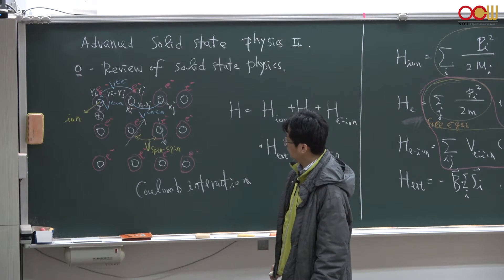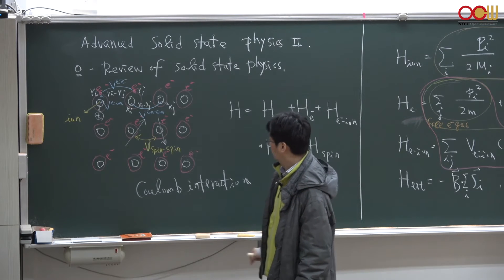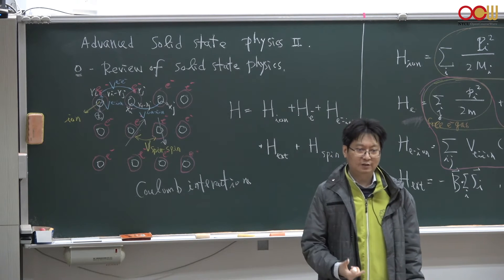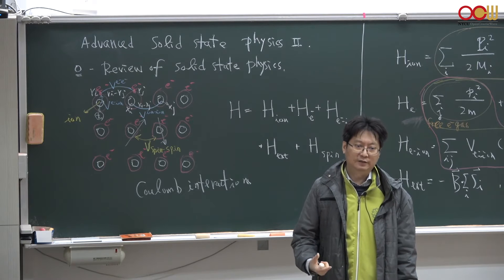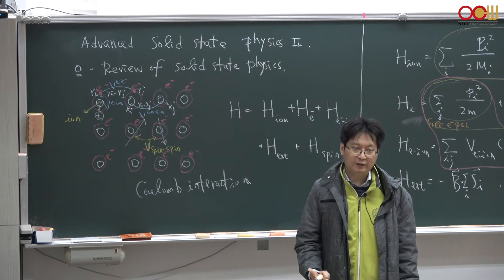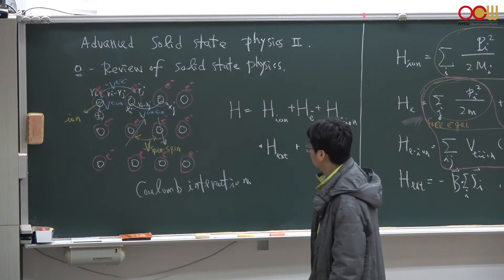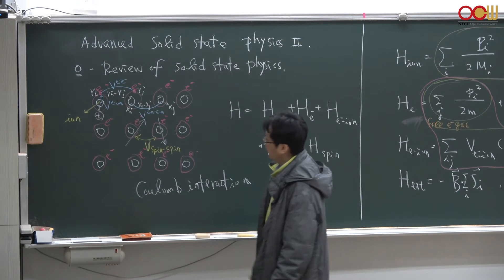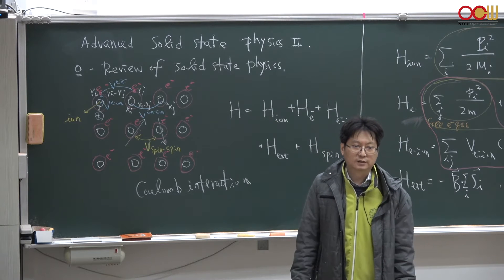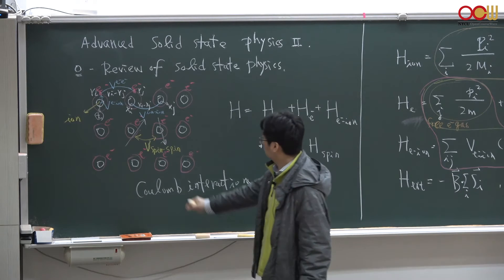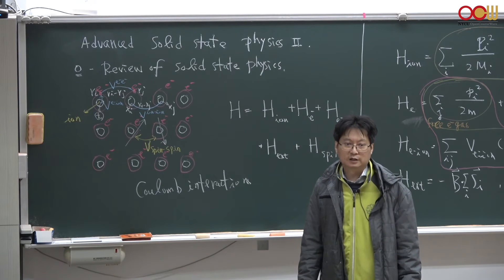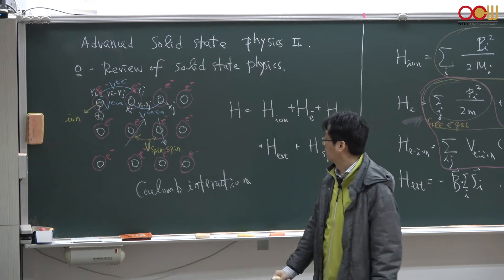We have a third kind of Coulomb interaction, between two ion cores. Just like the Coulomb interaction between two electrons, it is repulsive. These neighboring ion cores can interact via Coulomb interactions, and you could imagine that an ion core could also interact with further neighbor ions.